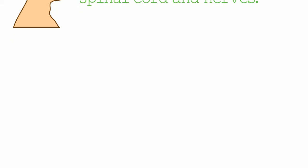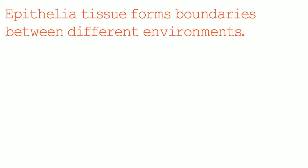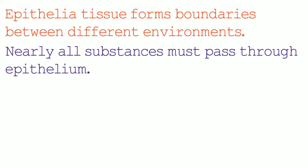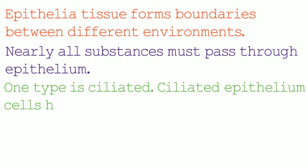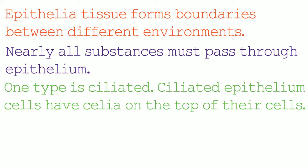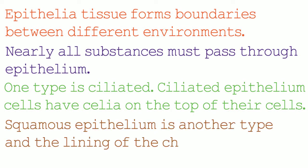Epithelia is another type of tissue. It forms boundaries between different environments. Nearly all substances must pass through epithelium. By the way, epithelium is the singular form of epithelia. There are many different types of epithelia. One type is the ciliated epithelium — ciliated epithelium cells have cilia on the top of their cells. The cilia are like hair and they allow the cell to move material along. Another type of epithelium is squamous epithelium. The lining of the cheek is made out of squamous epithelium.